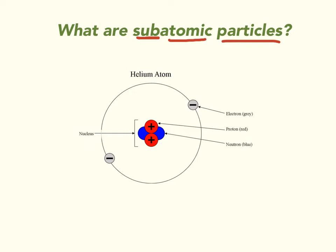If you look over on the right-hand side here, we have the three subatomic particles: an electron, a proton, and a neutron. It also has the charges. The electron has a negative charge and is located outside the nucleus. The nucleus is the center part. The protons are in red and are positively charged, and the neutrons are in blue and they are neutral.